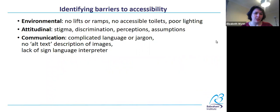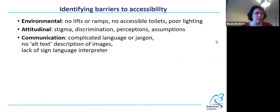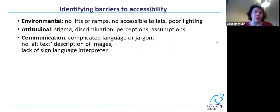Communication barriers. Using complicated language or jargon is an example that's potentially difficult for people with learning disabilities, and also for people for whom English isn't their first language. Not having alt text descriptions of images is another — people with visual impairments who use screen readers to read electronic documents or web pages won't get any information from images if there isn't a description. A lack of a sign language interpreter is another example.